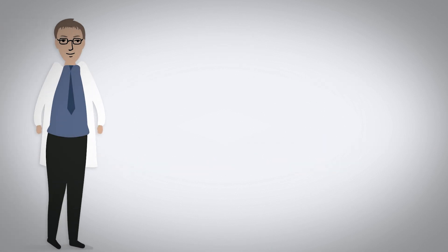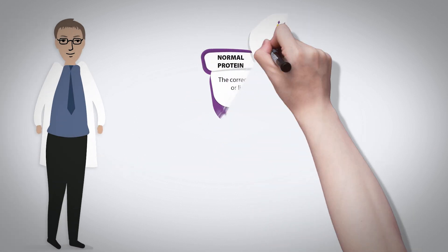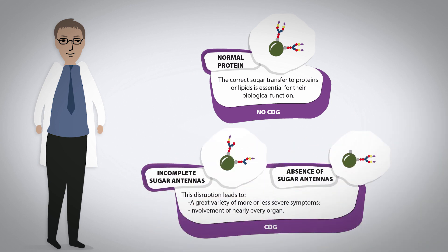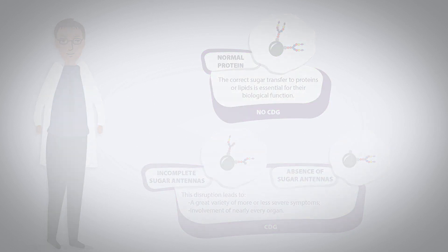For a standard glycoprotein, the correct sugar transfer to proteins or lipids is essential for its biological function. With incomplete or entire absence of sugar antennas, this disruption leads to a great variety of symptoms with varying severity, including the involvement of nearly every organ system.